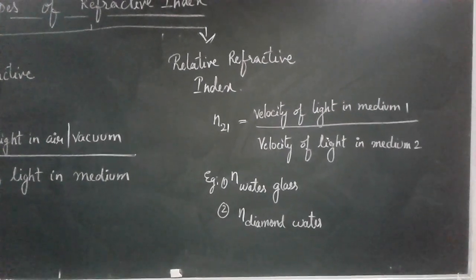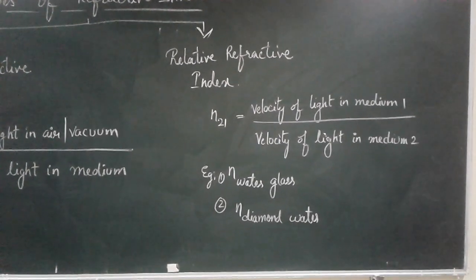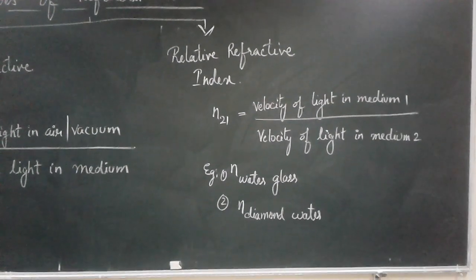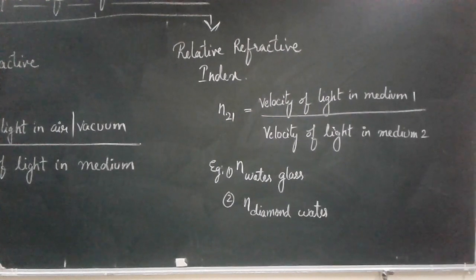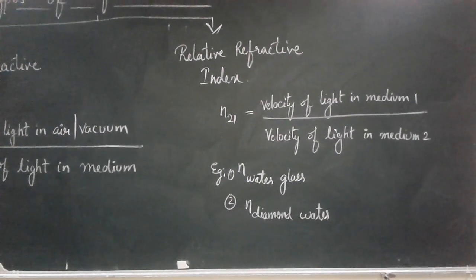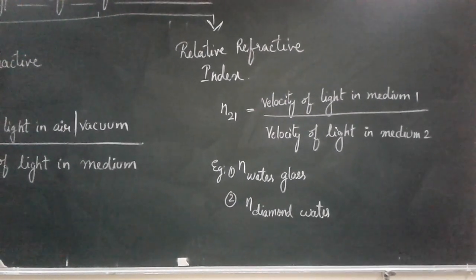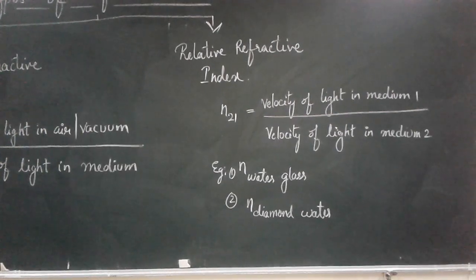For example, it is written as refractive index of water with respect to glass, where neither air nor vacuum is used, or refractive index of diamond with respect to water. Here also we have not used air or vacuum.